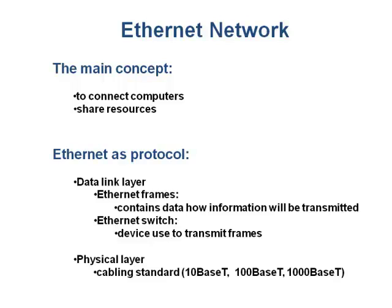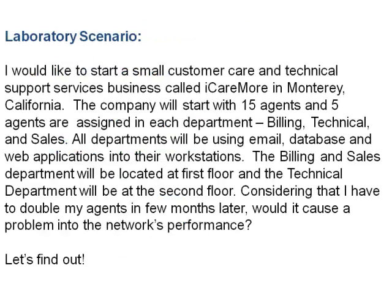T is the type of cable — in this case it refers to a twisted pair, also known as UTP. Base is for baseband transmission and 10 is the speed in megabits per second. 100-base-T is commonly known as Fast Ethernet, while 1000-base-T is known as Gigabit Ethernet.